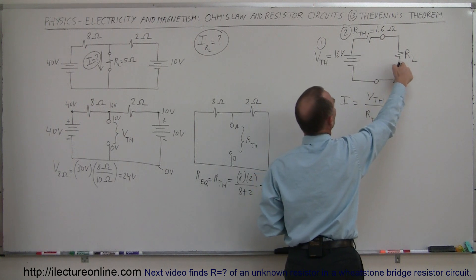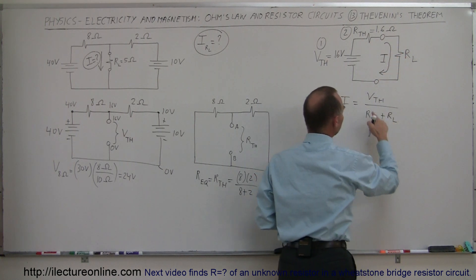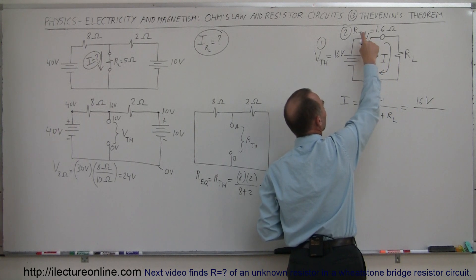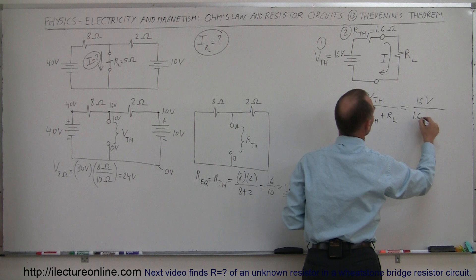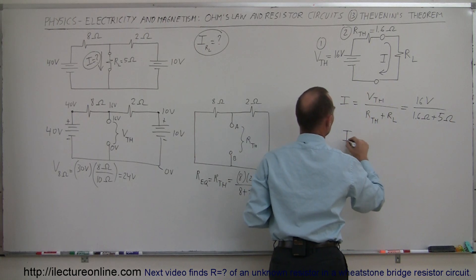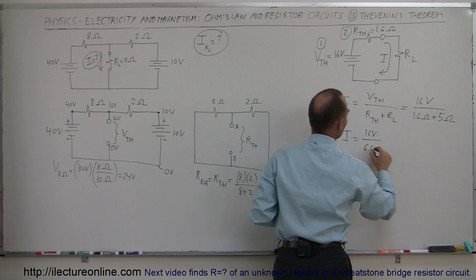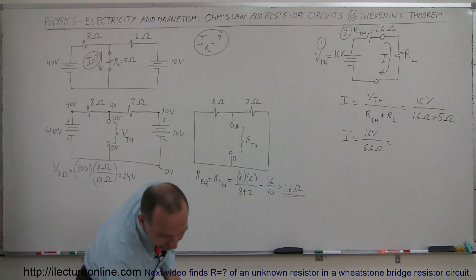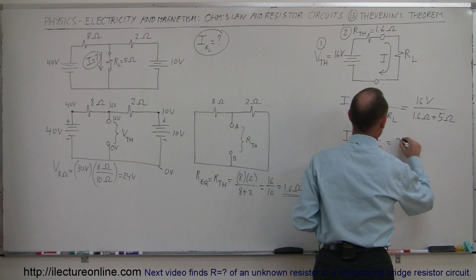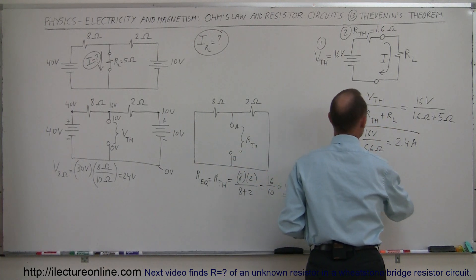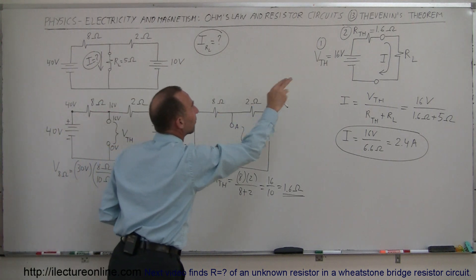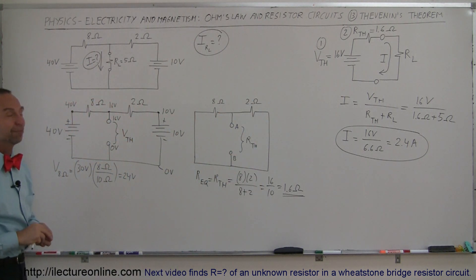To find the current through the load resistor, we take the Thevenin voltage of 16 volts and divide by the total resistance, which is the Thevenin resistance plus the load resistance: 1.6 ohms plus 5 ohms equals 6.6 ohms. So the current equals 16 divided by 6.6, which is approximately 2.4 amps. That's how you find the current through a load resistor by replacing the circuit with the equivalent Thevenin circuit — that is Thevenin's Theorem, a very handy theorem.